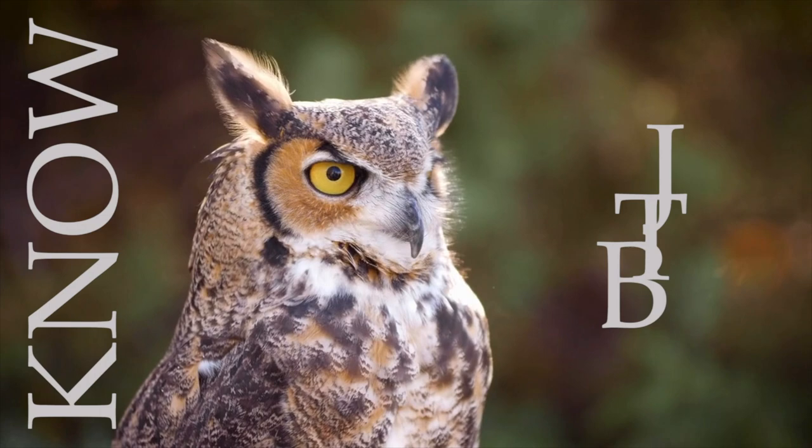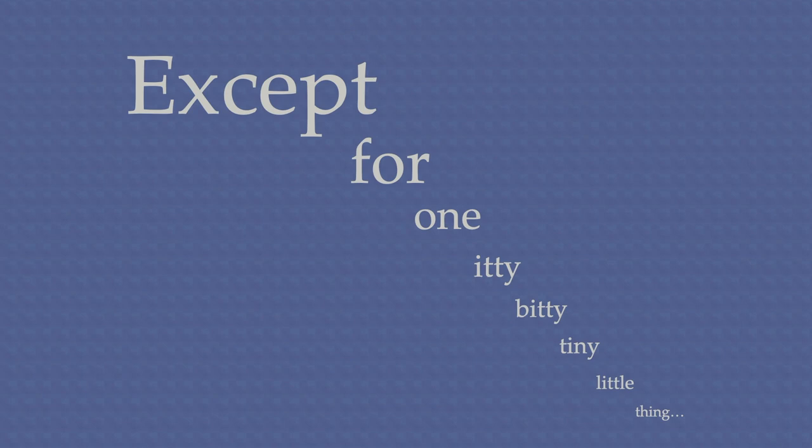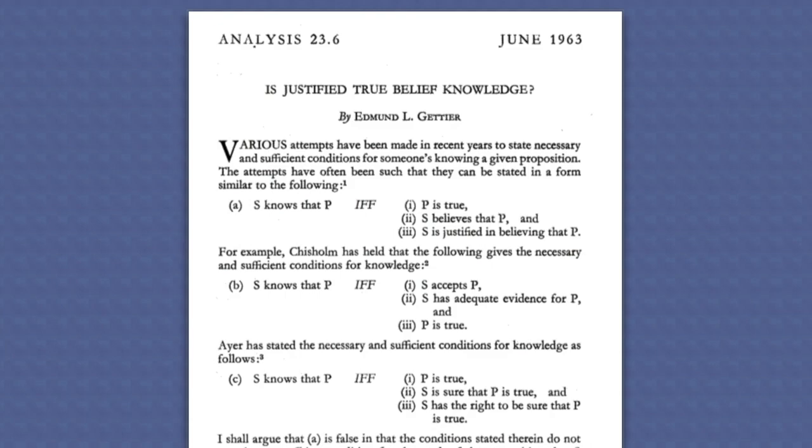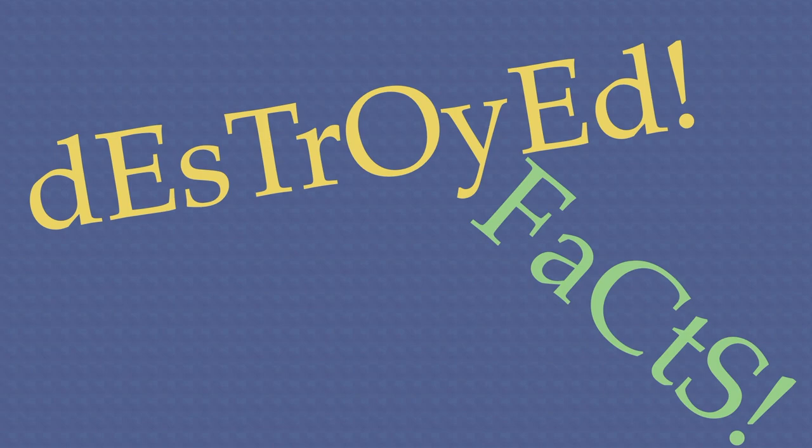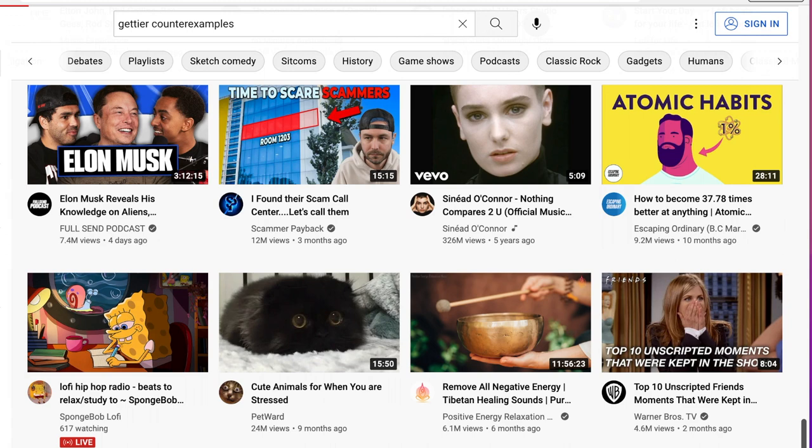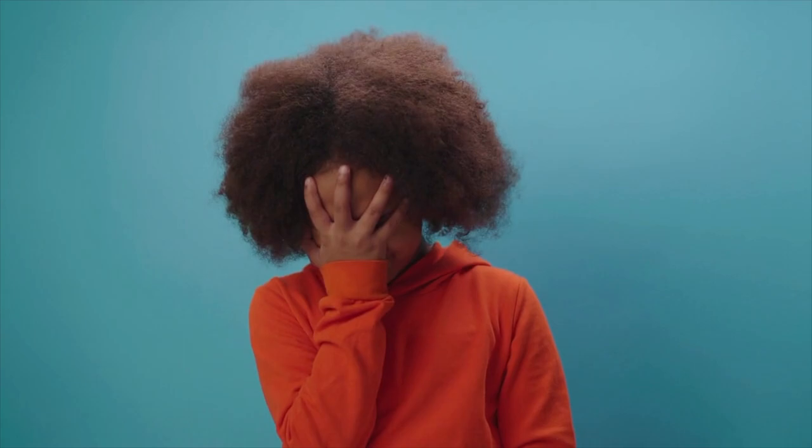This is called the JTB account of knowledge, and it's an excellent analysis, except for one thing: it's wrong. In his famous 1963 article, "Is Justified True Belief Knowledge?", Edmund Gettier destroyed the JTB analysis with facts and logic, and 10 coins. That's a story for a different video. Here, it's enough to say that ever since Gettier, philosophers have been hard at work trying to come up with a better analysis of knowledge, and nobody has really succeeded.